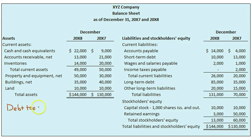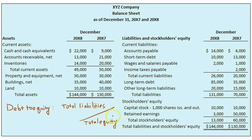The debt-to-equity ratio is computed as total liabilities divided by total equity. The debt-to-equity ratio is similar to the debt ratio in its focus on a company's leverage and its long-term solvency, but it tries to show the relative proportion of how assets were funded — either by debt or by equity.